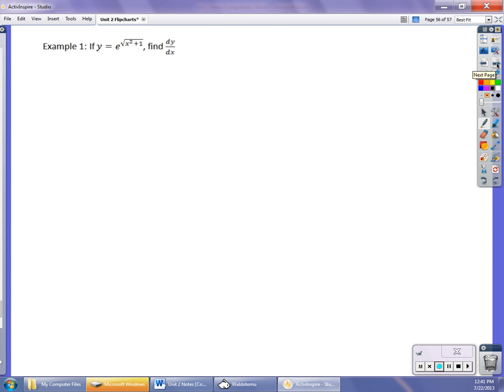So in this particular case, this first one I'm going to use chain rule. I'm going to have to use chain rule within chain rule. U is the square root of x squared plus 1. So I'm going to write it as y equals e to the u, where u is the square root of x squared plus 1 or x squared plus 1 to the 1 half.